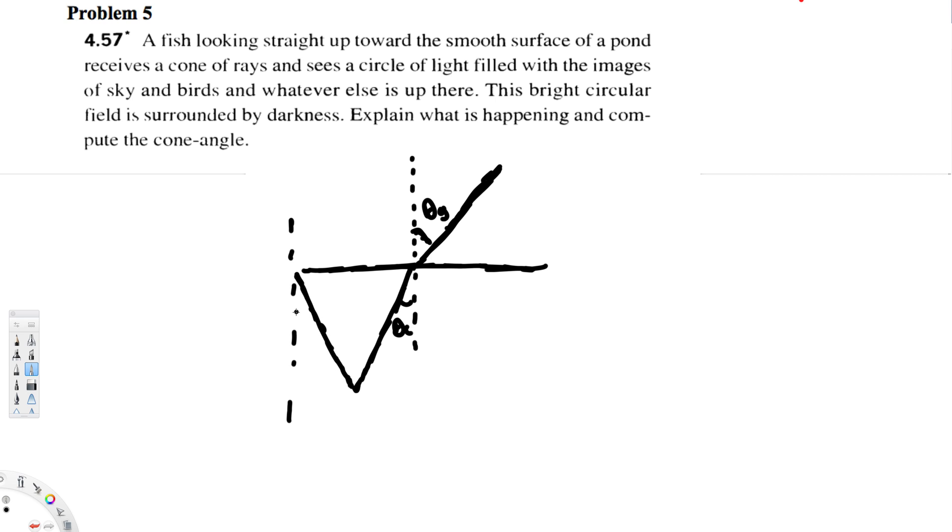This is also theta_c. So if this is theta_c, this one also theta_c, right? This one also theta_c because we have a Z-shape and it's parallel. If this is theta_c, this also theta_c. The question is asking to find this cone shape. This is our fish and the question is asking to find out this cone shape, the total angle. So that's going to be two theta_c.